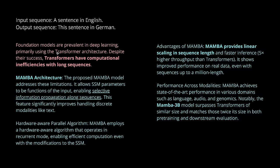Current LLMs based on the transformer have computational inefficiency with long sequences. Mamba uses SSM parameters as a function of the input data, enabling selective information propagation along the sequences. This is the feature that significantly improves handling of discrete modalities like text. They also find a parallel algorithm optimized for this selective information propagation, with hardware implementation for GPU memory hierarchies.